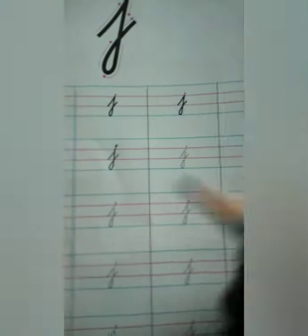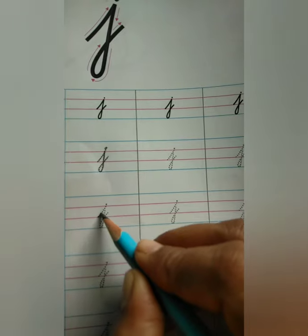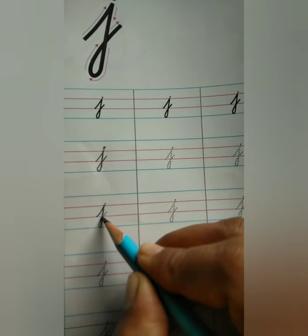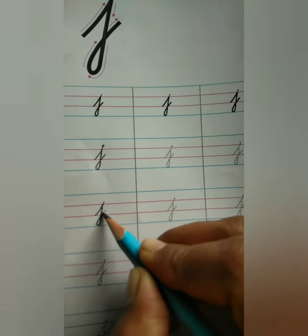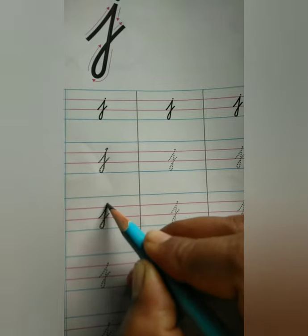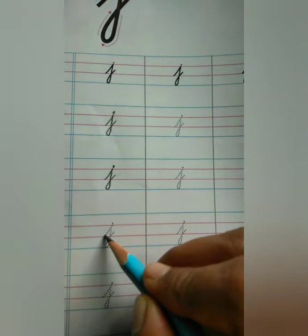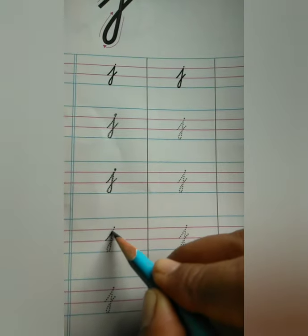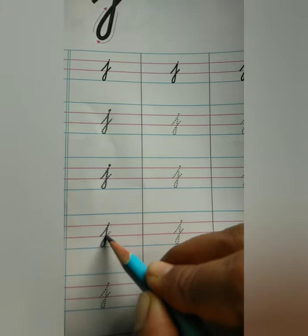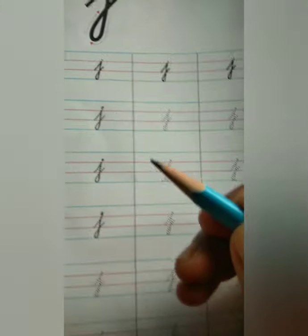Start, touch to red line, then downside, then curve and touch to dot. Start, downside, left side, curve and go, then dot.